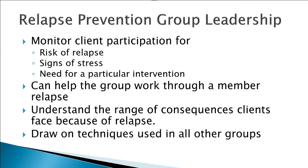Relapse prevention group leaders can help a group work through a member's relapse. When a member relapses, best practice says that person should not come back until they are clean and sober - they need to detox. But during that period when the person is gone, the group needs to grieve, deal with their anger, frustration, and fear that it could happen to them. These leaders need to understand the range of consequences clients face because of relapse - legal, work-related, interpersonal, and personal - but also how a relapse impacts the group. These relapse prevention groups draw on techniques used in all other groups, so the group leader needs to understand what techniques are available and how to most effectively use them.